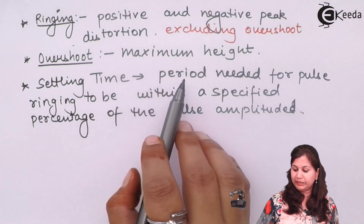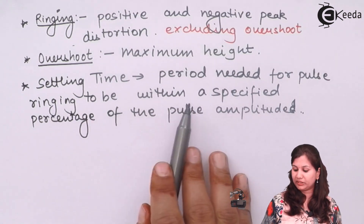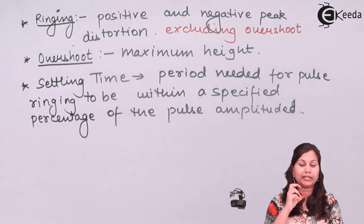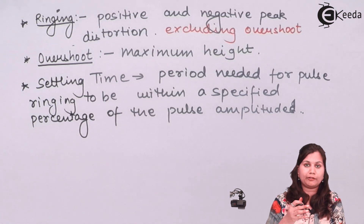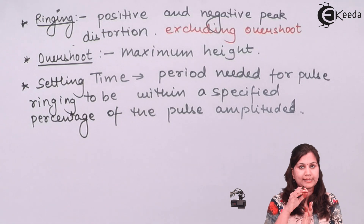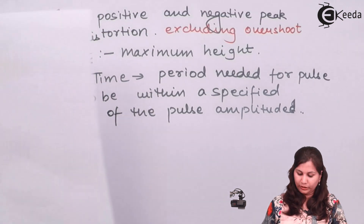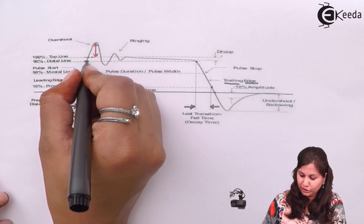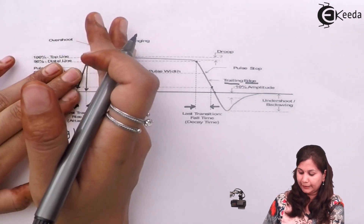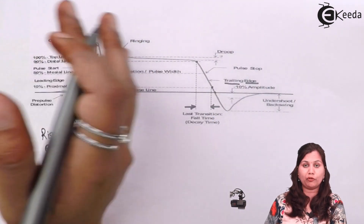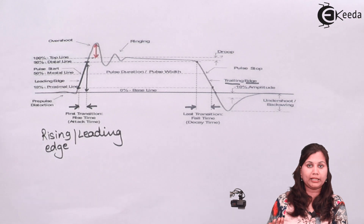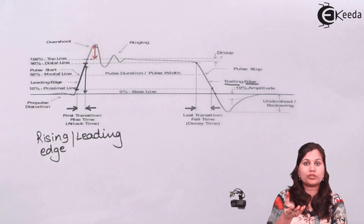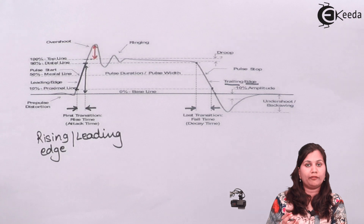Settling time is defined as the period taken by the pulse ringing to be within a specified percentage of the pulse amplitude. This period is calculated from the 90 percent point of the leading edge. The time taken by the pulse to settle within that specified value — say two percent, four percent, or five percent — will be the settling time.